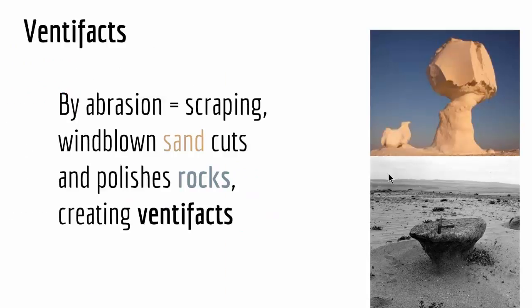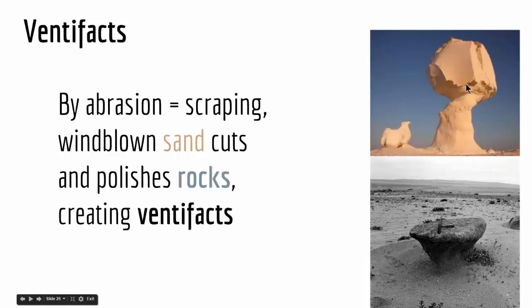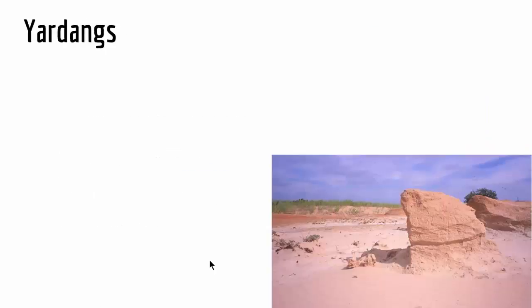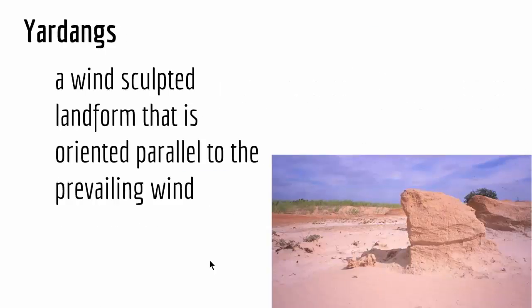Another structure created by wind erosion is ventifacts. Ventifacts are created by abrasion, which means scraping — wind-blown sand cuts and polishes rocks, creating ventifacts. As you can see in these pictures, ventifacts are made by the scraping of wind-blown sand that rubs against large structures and creates these polished figures.